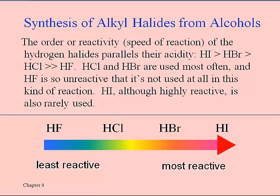One thing that's noted is that the particular halogen involved makes a big difference. As you can see here, HI reacts faster than HBr, faster than HCl, and much, much faster than HF. The chloride and bromide are the ones used a lot — they are the cheapest — so oftentimes we are making chlorides and bromides. HF really doesn't react very fast. There are other methods to put fluorine in molecules, but we won't discuss fluorine in this chapter because, at least as far as hydrogen fluoride goes, it doesn't really do much.